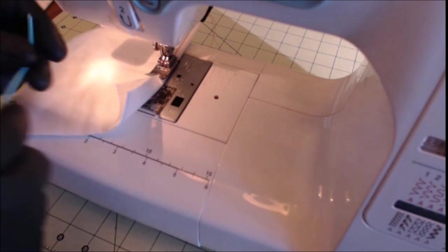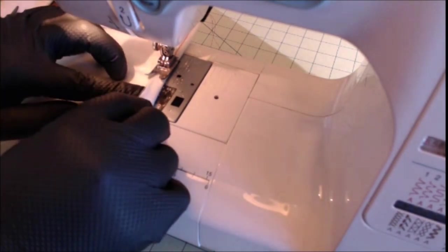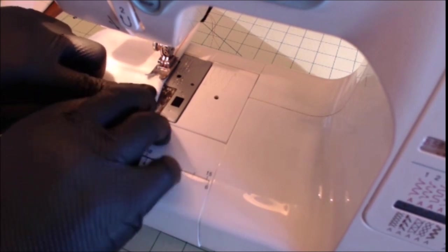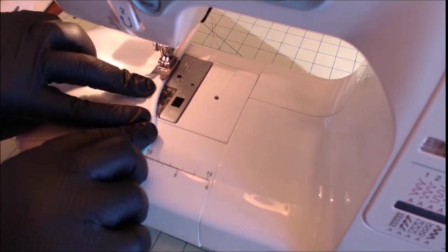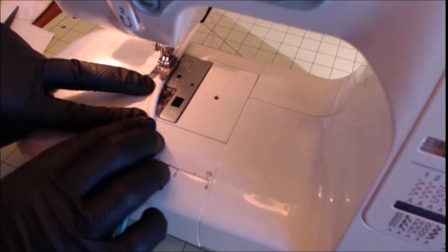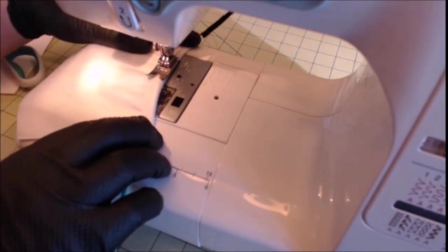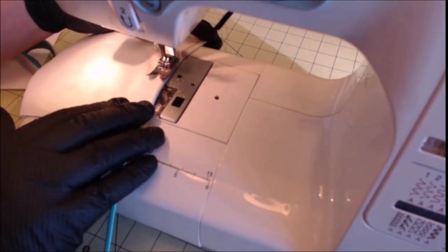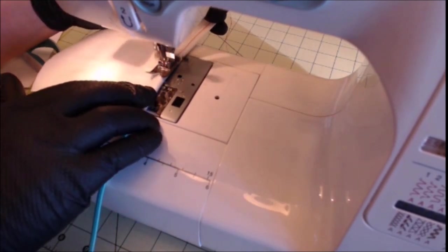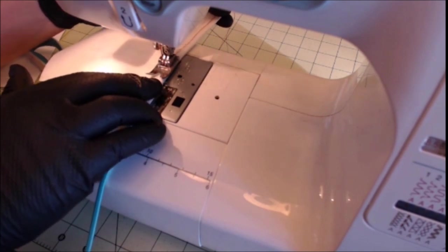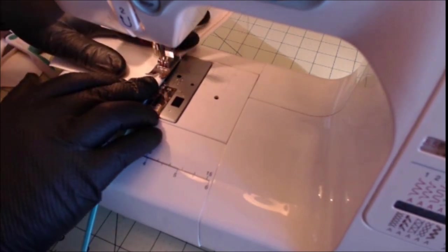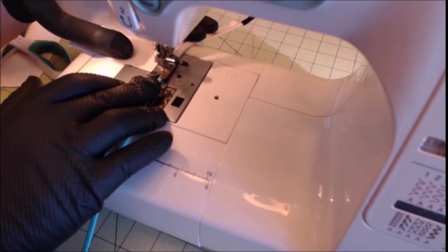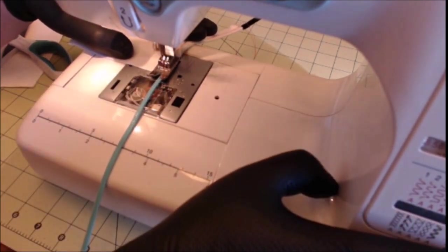You're going to take one end of that string and butt it right up against the end of the pipe cleaner. Then continue that seam down, locking that end of the hair tie in place. I'm going slow here because I'm not much of a sewer. In fact, I haven't touched the sewing machine since middle school. So if I can do this, anybody can.